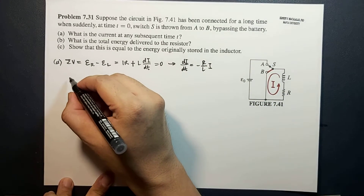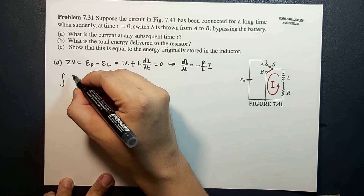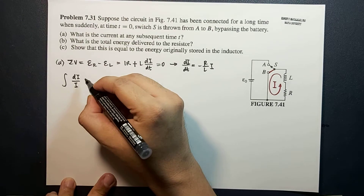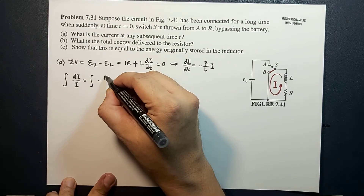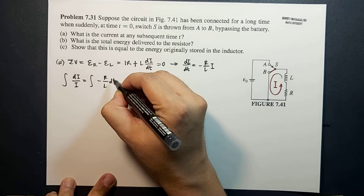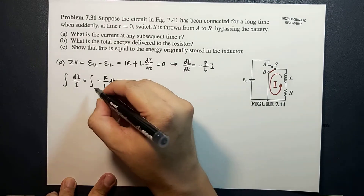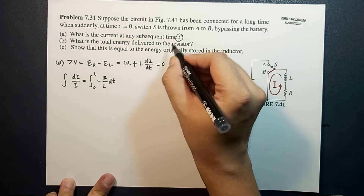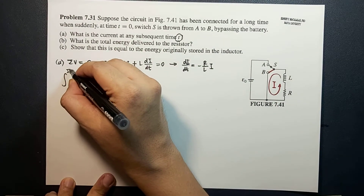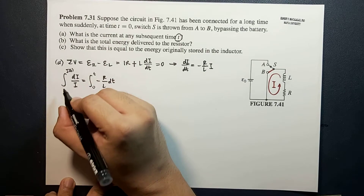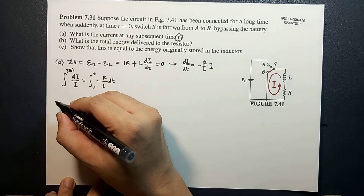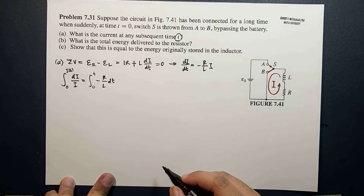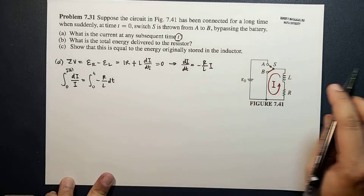Solving this differential equation, we take the integral of dI over I, which equals the integral of negative R over L dt. The integration for time runs from 0 to t, and for current from the initial current I₀.